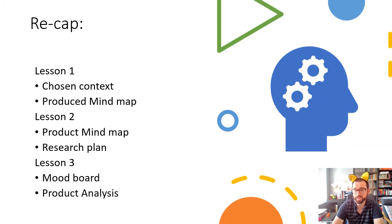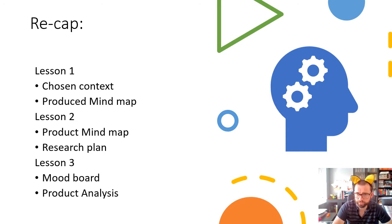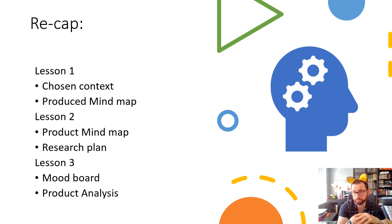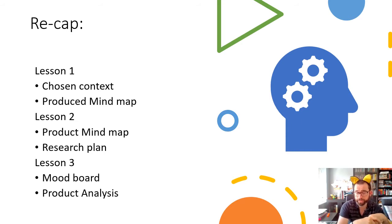Just a quick recap of what we did in previous weeks. Lesson one was choosing our context and producing a project ideas mind map. Lesson two was doing a mind map about the exact product you want to make, as well as research plans. Then lesson three, completed last week, was our mood board and product analysis.